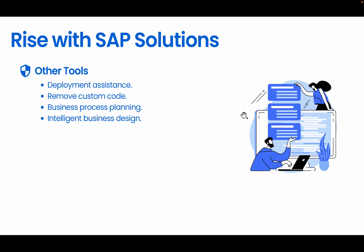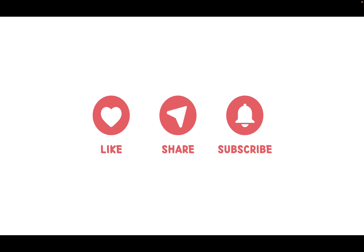Apart from the previously mentioned products, SAP also offers services that help customers move from ECC or on-premises systems to S/4HANA cloud efficiently. Examples include deployment assistance, removal of legacy custom code, supply chain process improvement, business scenario planning, and intelligent business design. All these solutions and products are included as part of the Rise with SAP deal and will expedite the customer's journey to the cloud.